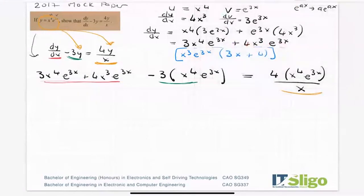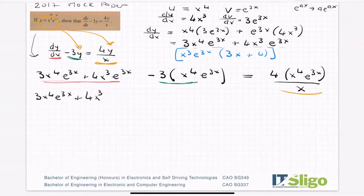Okay, so then let's start working with that. So 3x to the 4 e to the 3x plus 4x to the 3 e to the 3x minus 3x to the 4 e to the 3x. And I was right. That's why I had a suspicion I'd leave it as black because now you can see things are starting to cancel.